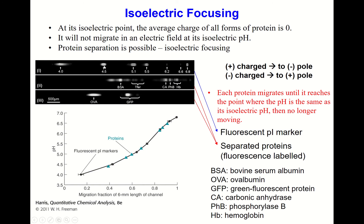The protein remains at that position while other proteins continue migrating. A protein with an isoelectric point of, say, 4.5 loses its charge in a different region and stops there. In this way, the initial protein mixture is separated according to isoelectric point — a very powerful separation method applicable to proteins, enzymes, and other species.